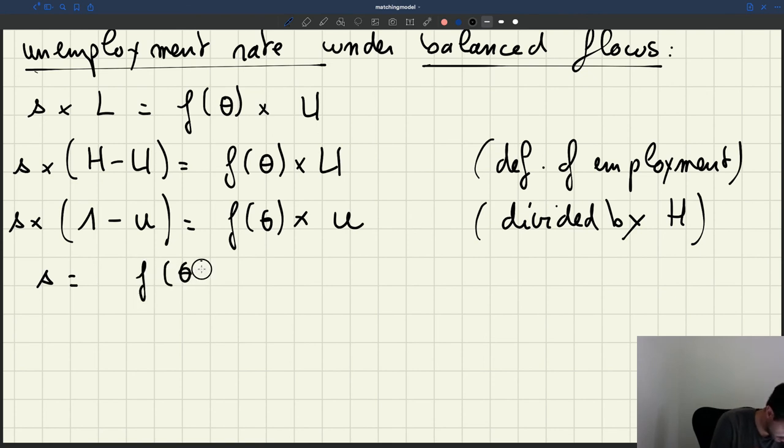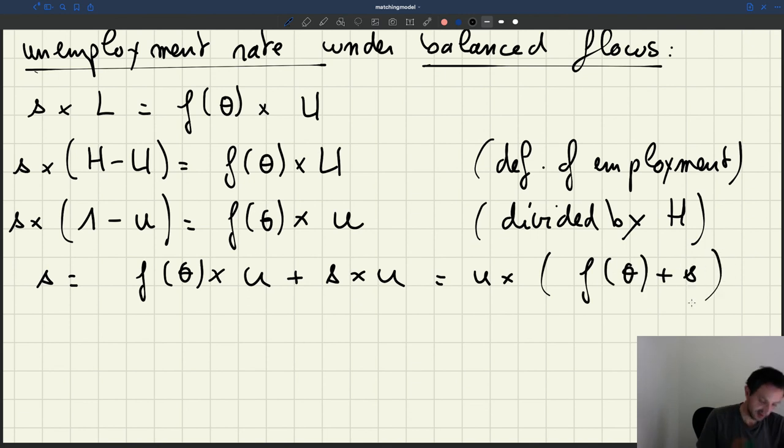So I get F of theta times u plus S times u, that comes from the other side of the equation, and so that's just u times F of theta plus S. And then what I can do is I can just divide everything by F of theta plus S, and then I get that u is equal to S divided by S plus F of theta.